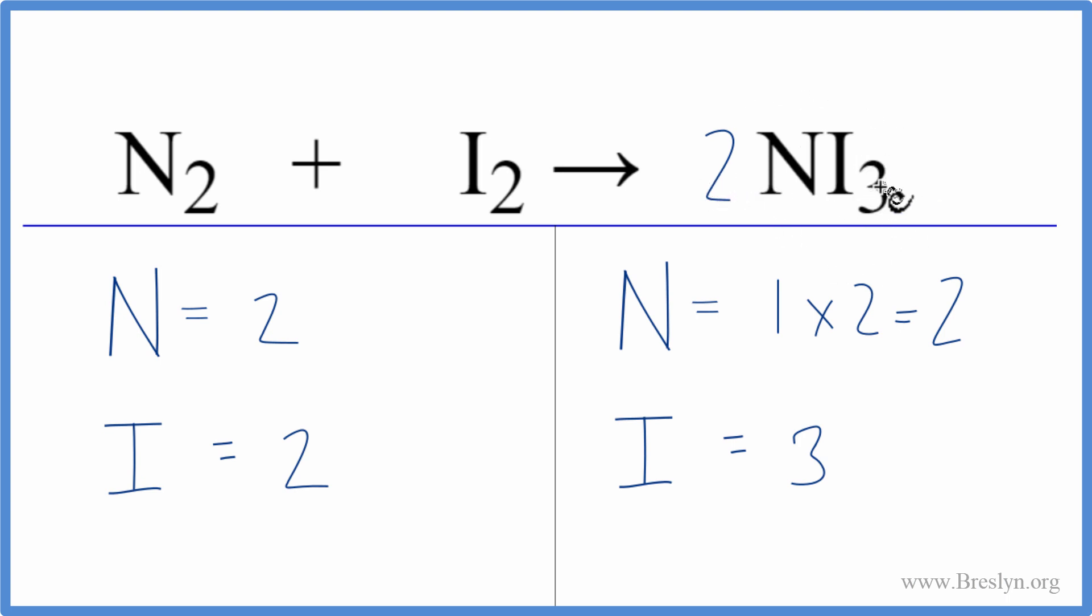And this two applies to everything. So we have the three here times the two, that gives us six iodine atoms.